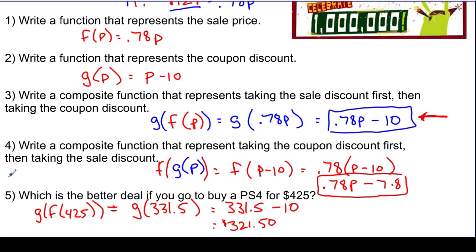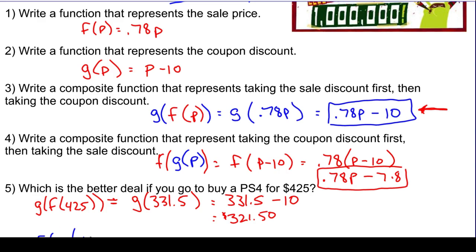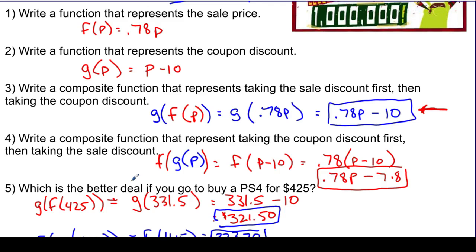Now for the other direction: f of g of 425. First, g of 425 is easy — take $10 off — so that's f of 415. Then the f function takes 0.78 times 415, which equals $323.70. Comparing the two prices, there's about a $2.20 difference, confirming that the order of discounts matters — applying the sale percentage first and then the coupon saves more money.